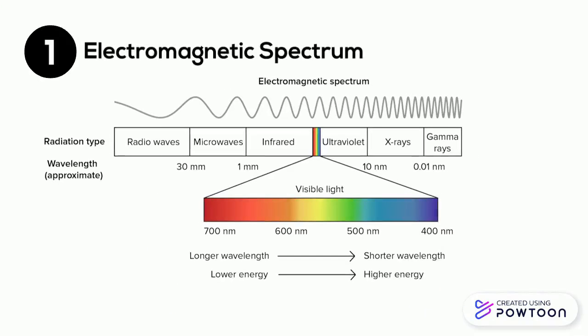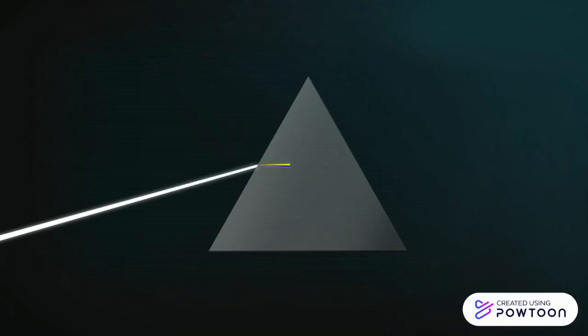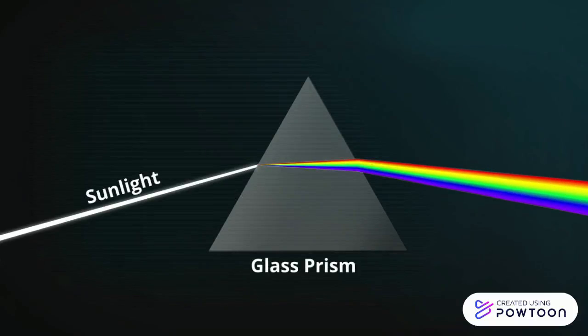The electromagnetic spectrum includes all forms of electromagnetic radiation including visible light. Color is mainly determined by the wavelength of light and each is associated with a photon with a distinct amount of energy. The longest wavelength appears red and the shortest appears violet. The full spectrum of visible light can be achieved by using a glass prism in sunlight.